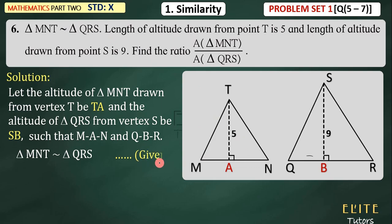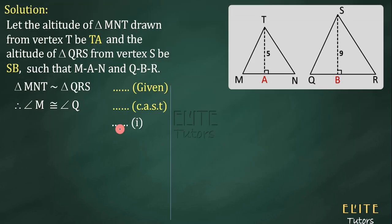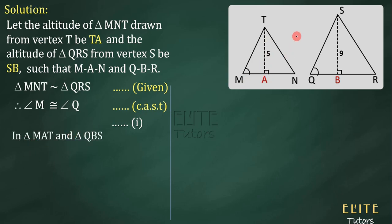Since triangle MNT is similar to triangle QRS — this is given — we write that angle M equals angle Q, corresponding angles of similar triangles. Now in triangle MAT and triangle QBS: angle M equals angle Q, which we have already established. And angle TAM — or angle MAT — equals angle SBQ — or angle QBS — because each is 90 degrees since TA and SB are altitudes, meaning they are perpendicular.